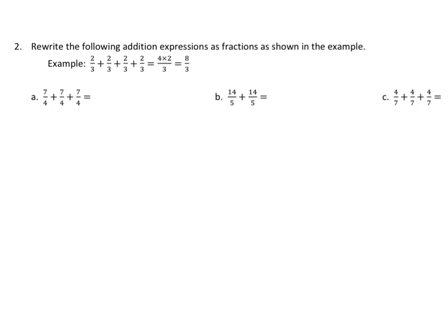In this set of problems, they tell us to rewrite the addition expressions as fractions, as shown in the example. If we look at the example, we see we have 2 thirds plus 2 thirds plus 2 thirds four times. We're adding it four times, which is the same as 4 times 2 over 3 equals 8 thirds.